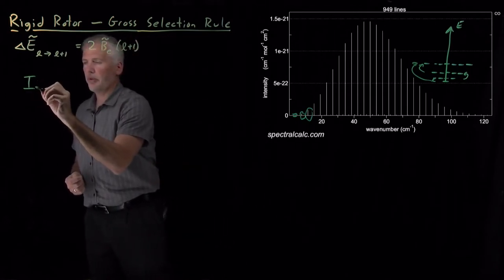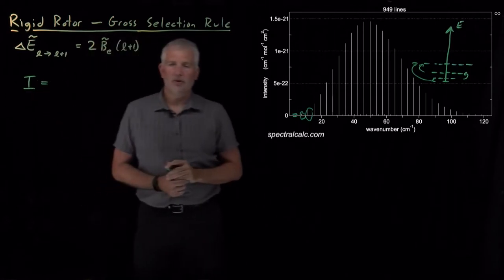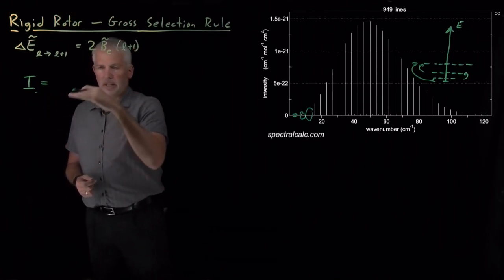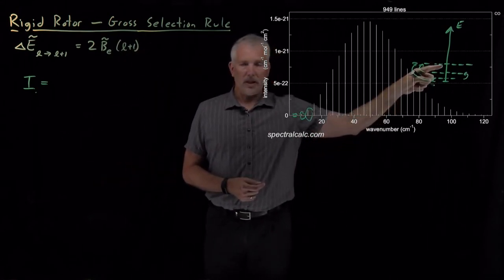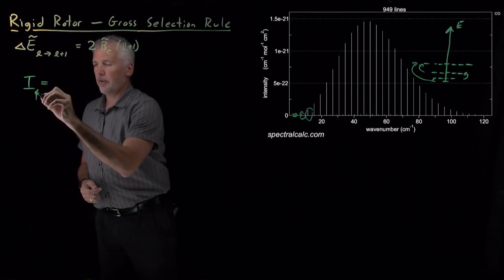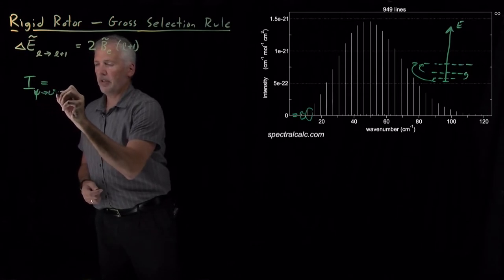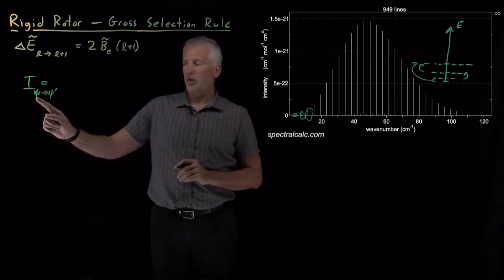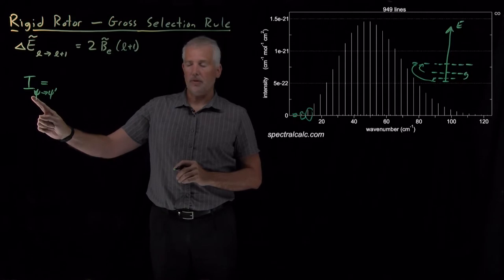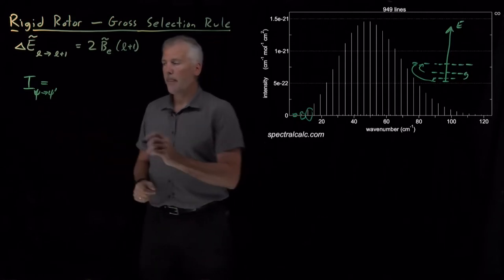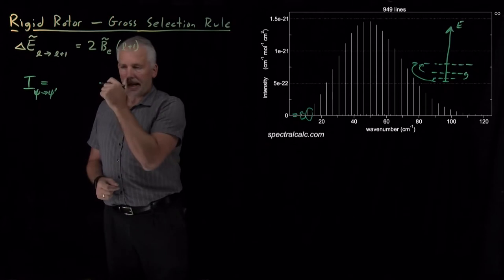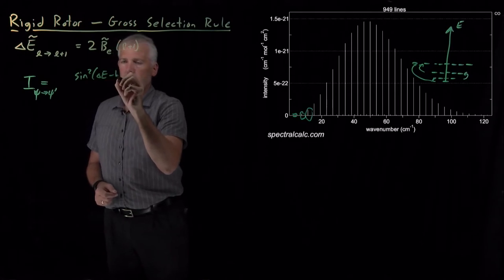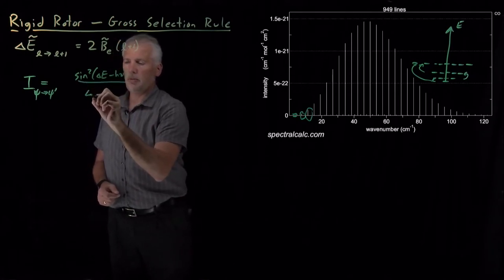So to understand those selection rules, we need to know the following equation, which tells us how strongly a molecule will absorb light in making a transition from one state to another state, maybe the L equals 0 state up to another state, or the way we'll talk about it, from one initial wave function to some final wave function. So the intensity with which that molecule in state psi will absorb the right frequency of light to make a transition up to the state psi prime, we can write that as the following somewhat complicated equation.